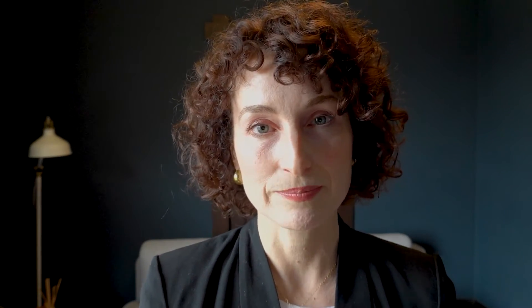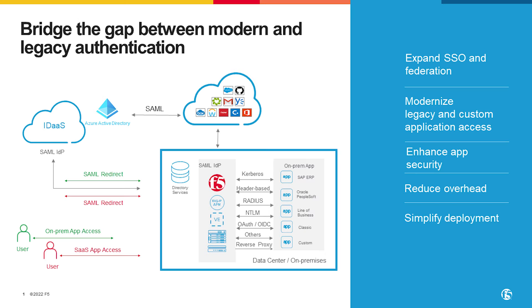We're really providing that single point of control, supporting both modern and legacy authentication protocols, so you can stand up all the same policies in front of every app in your portfolio, no matter where it is or what type of app it is. Access Policy Manager serves as an identity-aware proxy, acting as a bridge between legacy and modern authentication protocols and serving as a central point of control.